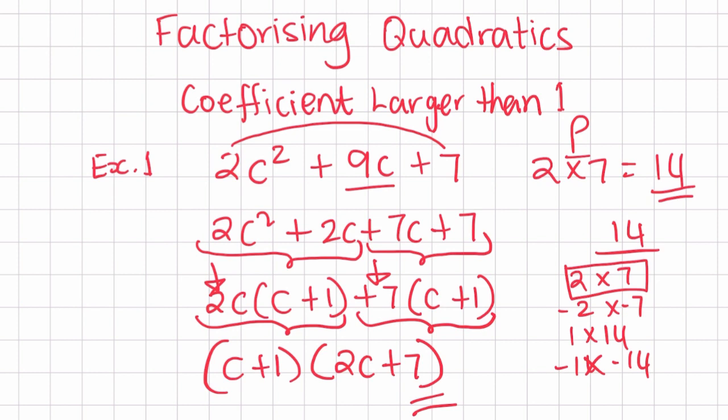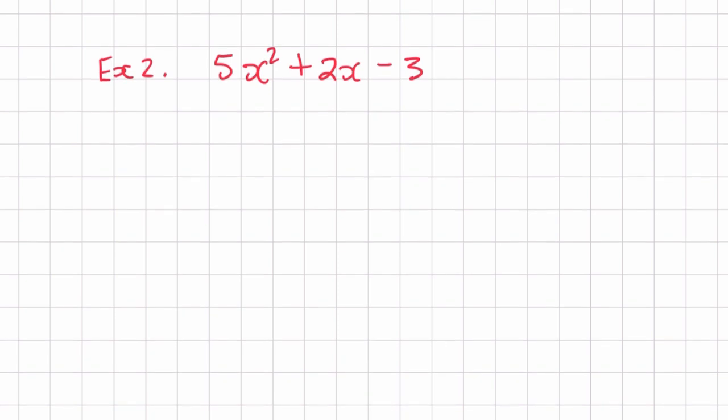So we need to make sure we multiply the coefficient by the constant number to find the product, then split it, find the product and sum, factorize it in two parts, and finally factorize it again. In this example, we have a negative.